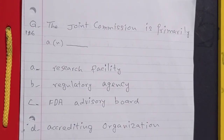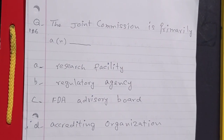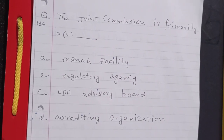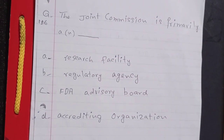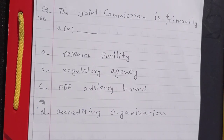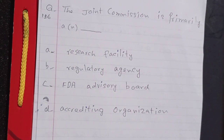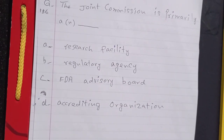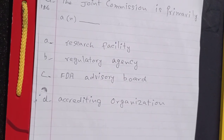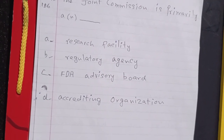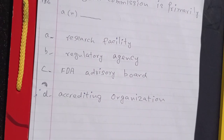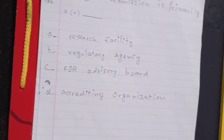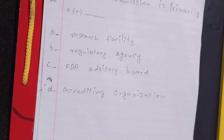The Joint Commission is primarily: a research facility, a regulatory agency, an FDA Advisory Board, or an accrediting organization. The answer is D: accrediting organization.